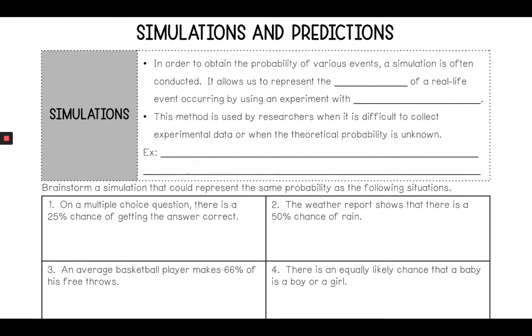Welcome back. Today we're going to go over simulations and predictions. In order to obtain the probability of various events, a simulation is often conducted. It allows us to represent the likelihood of real-life events occurring by using an experiment with similar probabilities. This method is used by researchers when it is difficult to collect experimental data or when the theoretical probability is unknown.